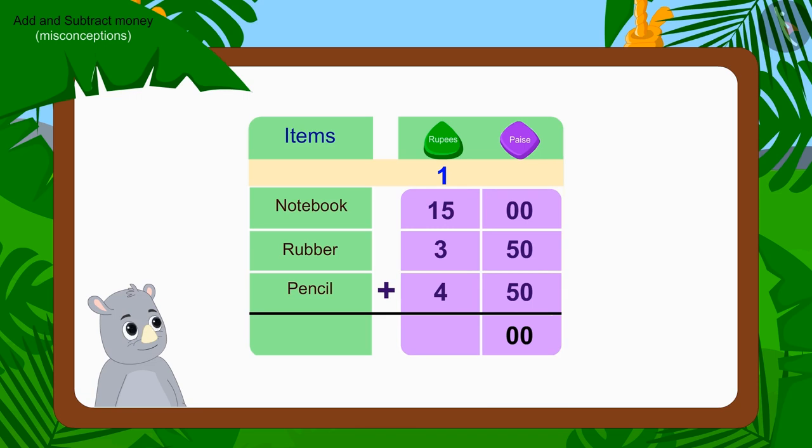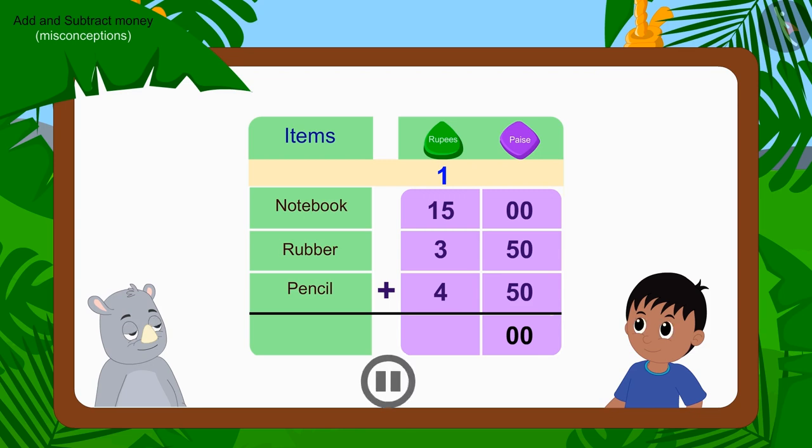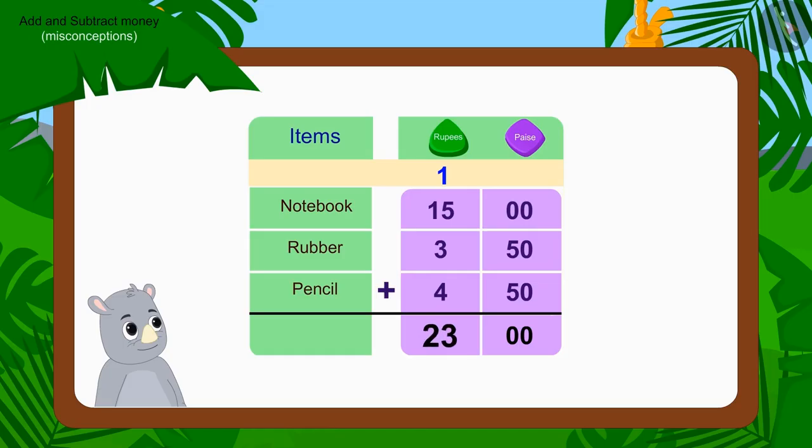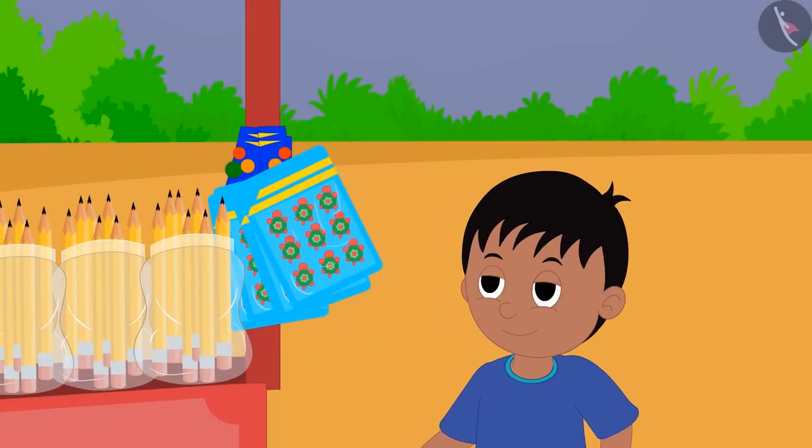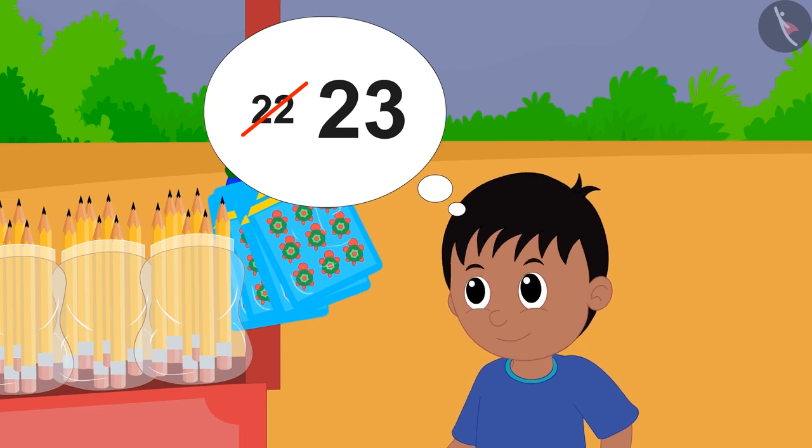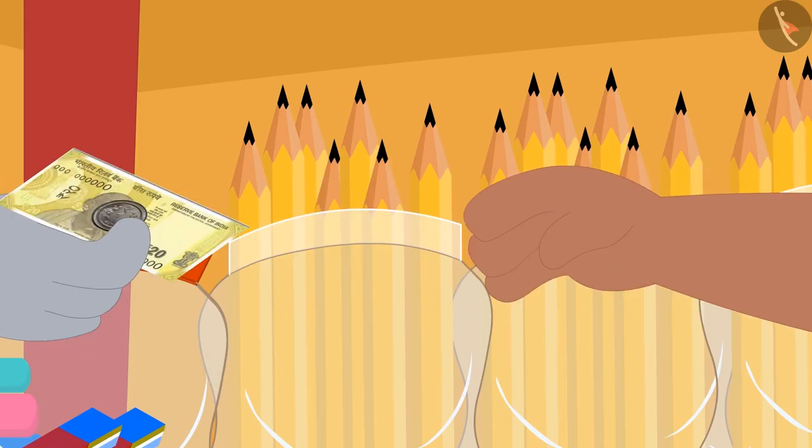Now can you tell by adding rupees how much Raju actually has to pay for the goods to Gaggu? If you want, you can pause the video and find the answer. Well done kids. You have found the right answer. Raju owes Gaggu twenty-three rupees for those items. Just like you, Raju too caught Gaggu's mistake and gave him twenty-three rupees.